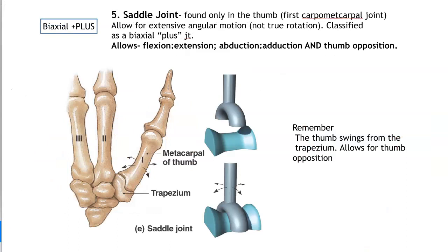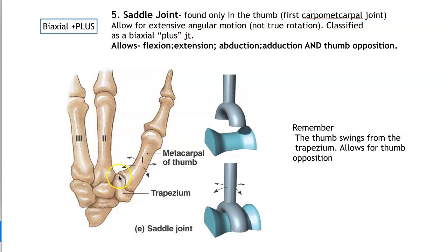Our fifth joint is the saddle joint — a modified condylar joint with biaxial movement. It moves in two planes, allowing flexion, extension, abduction and adduction, plus a little bit more. The saddle joint we need to know allows opposition of the thumb. This is where the trapezium and the metacarpal of the thumb come into play — the thumb swings from the trapezium, and that allows for opposition.